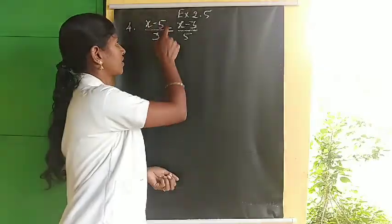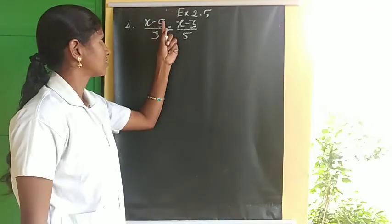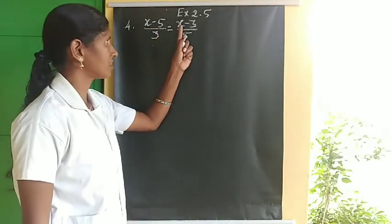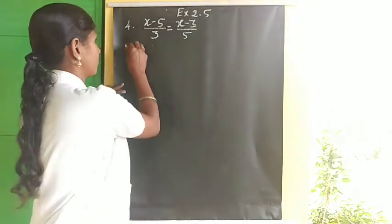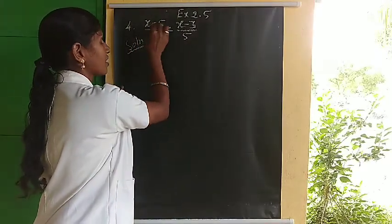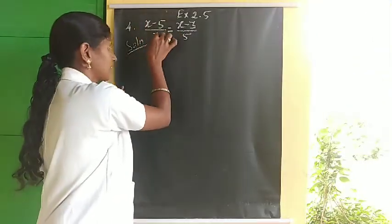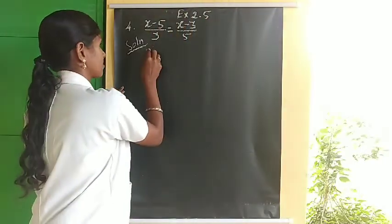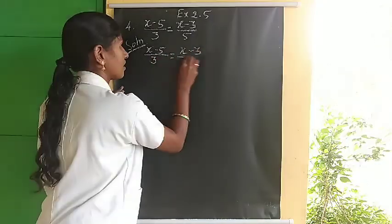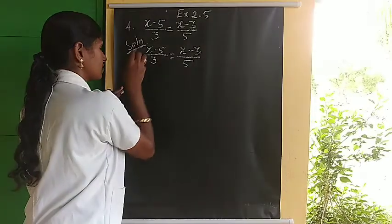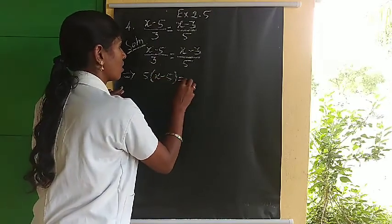The problem is: x minus 5 divided by 3 is equal to x minus 3 divided by 5. We have to find the x solution. First step: transpose 5 to LHS and 3 to LHS.